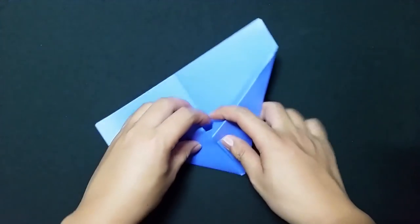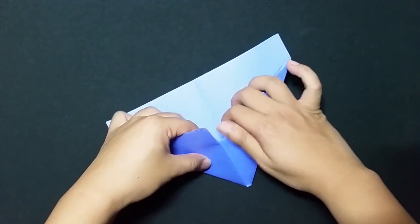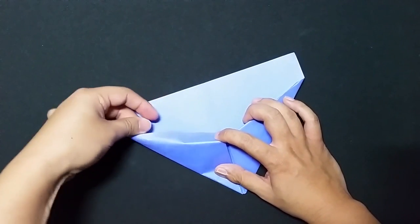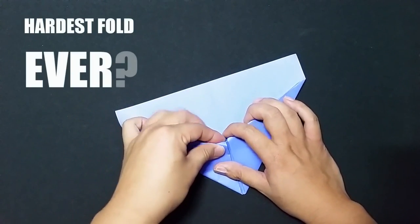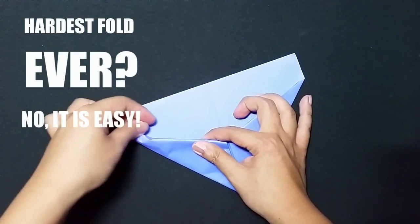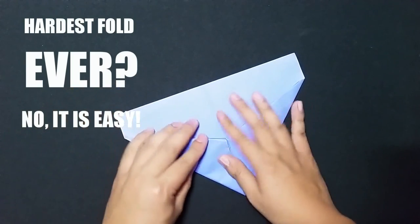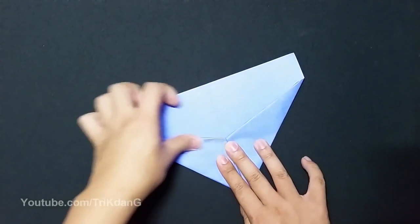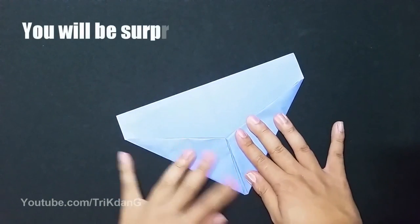After you finish this layer, you will do the same thing for this side. So curve this layer like this, push it down. Curve it and push it in slowly. This is the hardest step when you make this paper airplane, but after you finish it, you will be surprised how it flies.